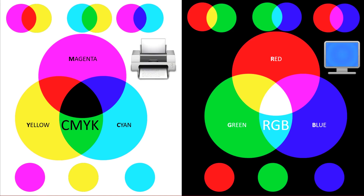So CMYK is used in printing, which you may have noticed — a printer has ink cartridges labeled cyan, magenta, yellow, and black: CMYK. However, fun fact, the K technically stands for key, not black, like many people rather reasonably assume. Now we'll come back to CMYK in a second, but first let's go over RGB, which is an additive color model.